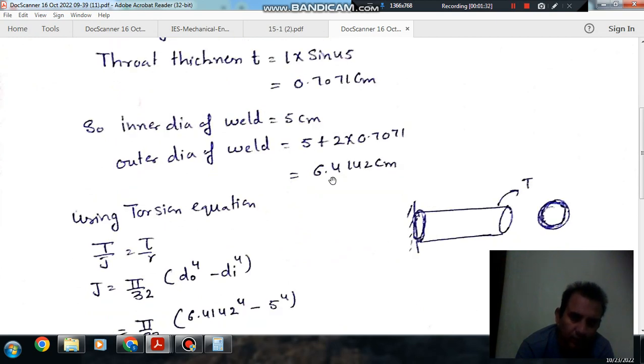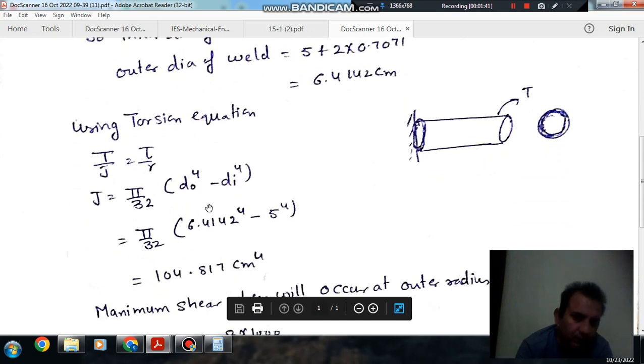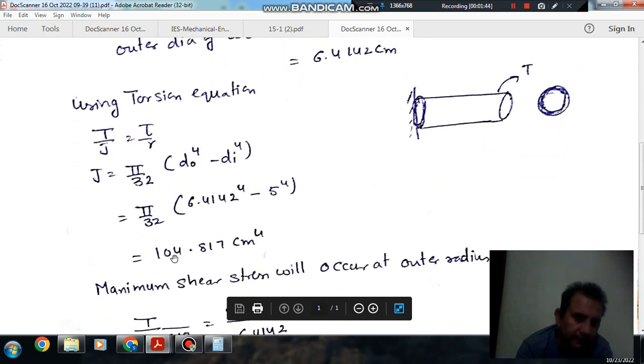The weld can be taken as a hollow shaft with polar moment of inertia. Here is the throat for the weld. The outer radius is 3.2071 cm and throat thickness is 0.7071 cm. This gives us the polar moment of inertia.